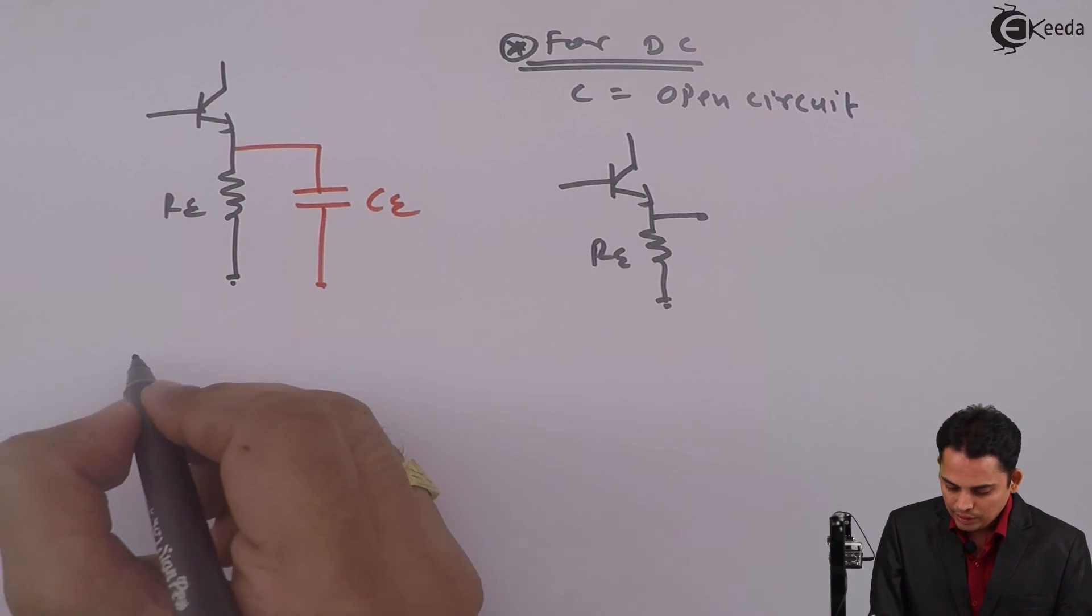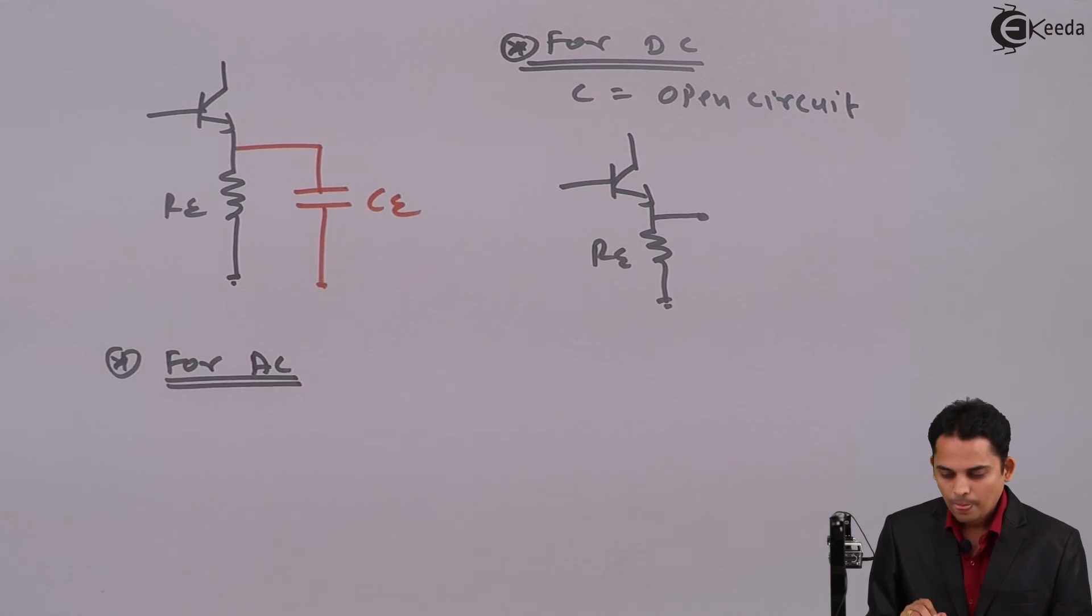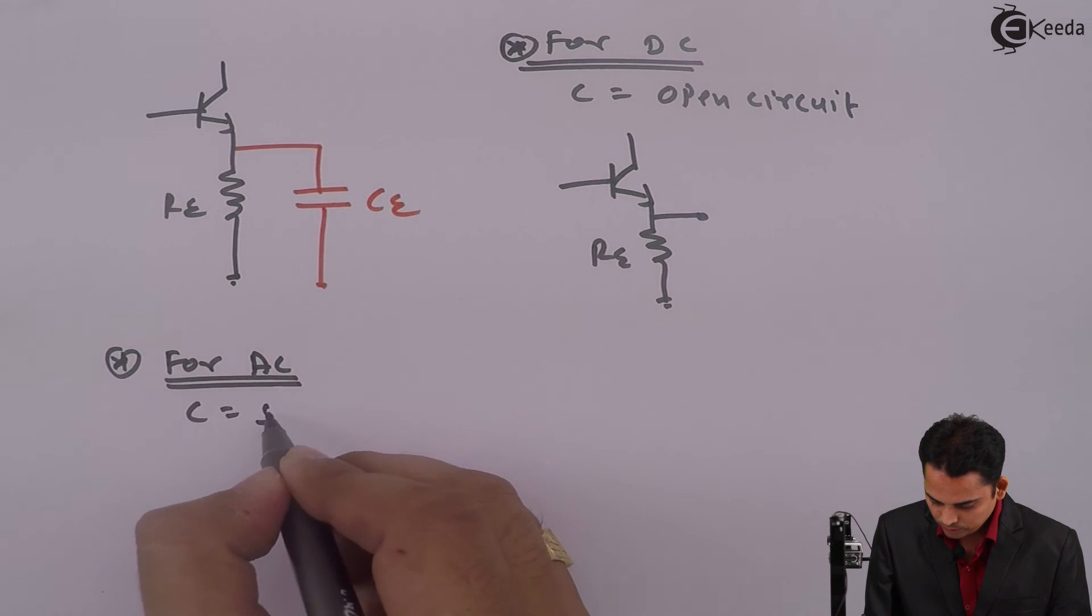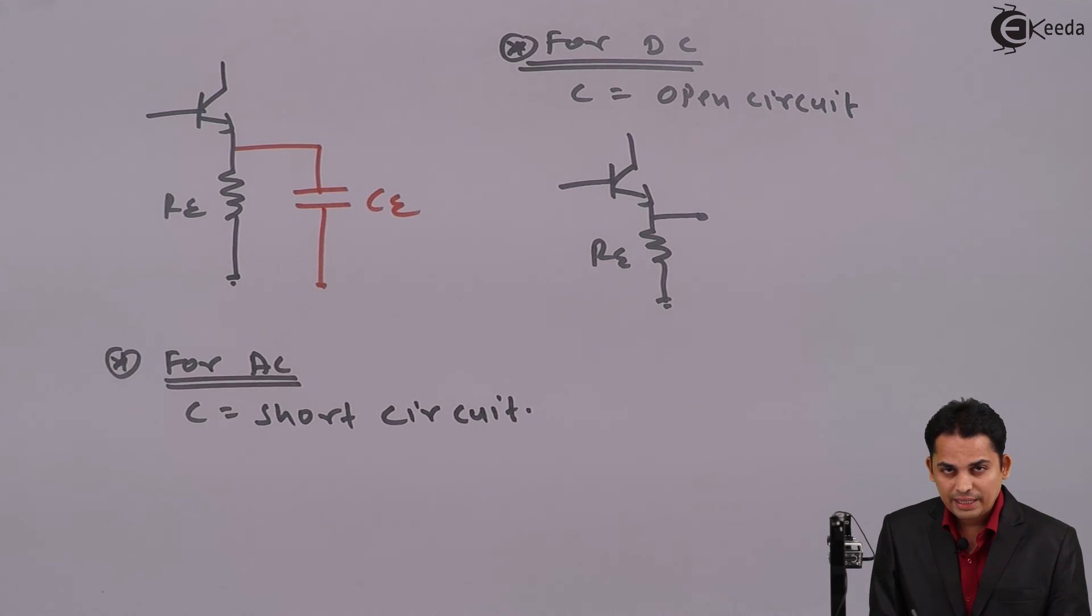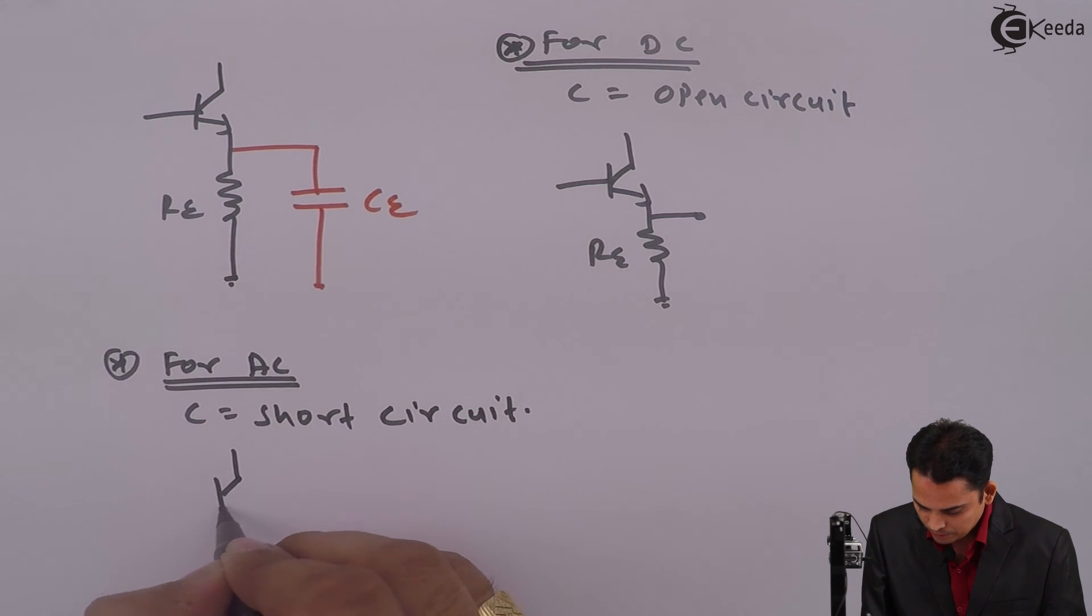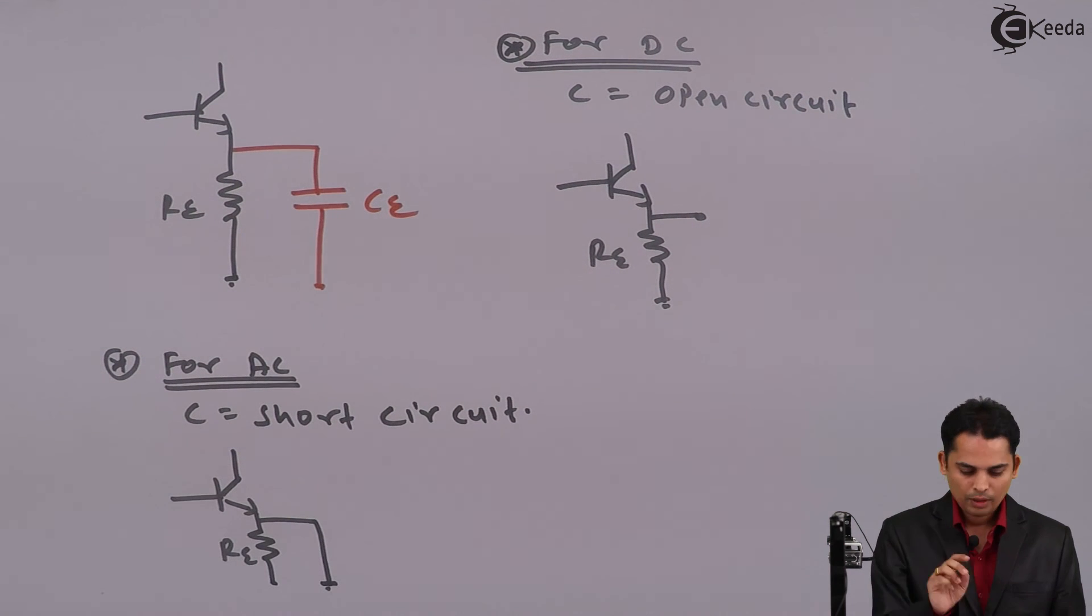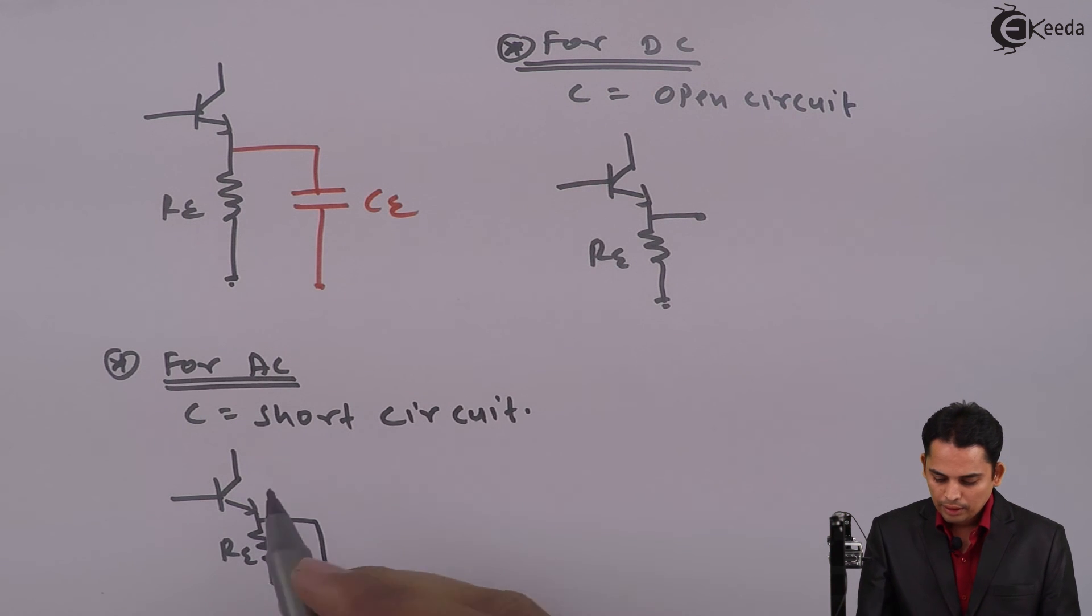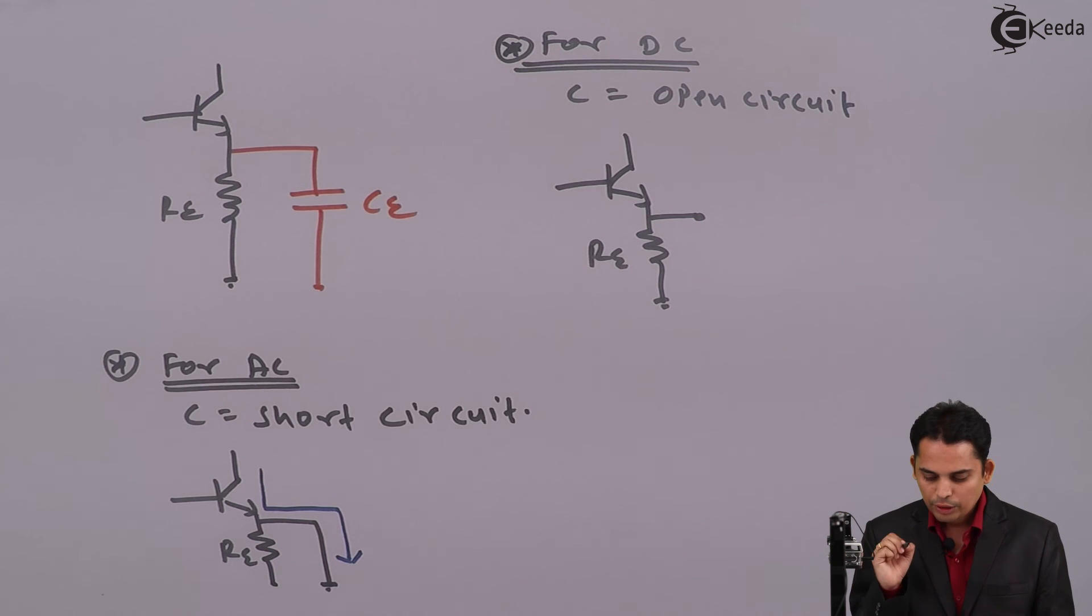For AC, capacitor is short circuited. Hence, circuit diagram will become like this. Now, if current is flowing, it will flow from this path during AC.